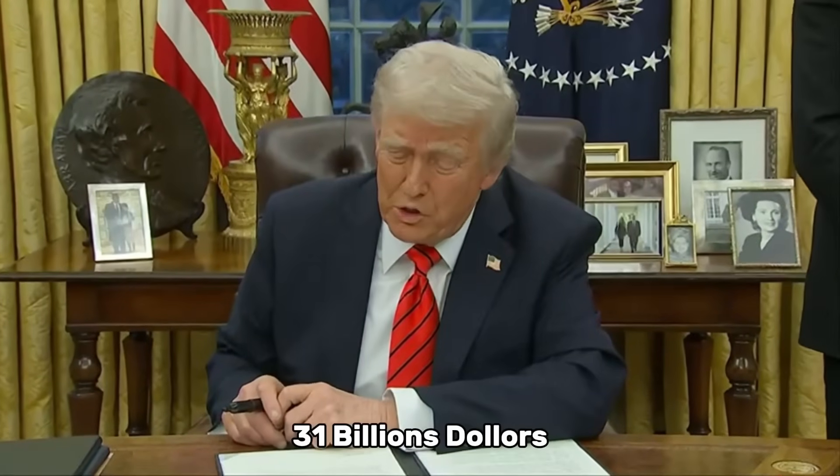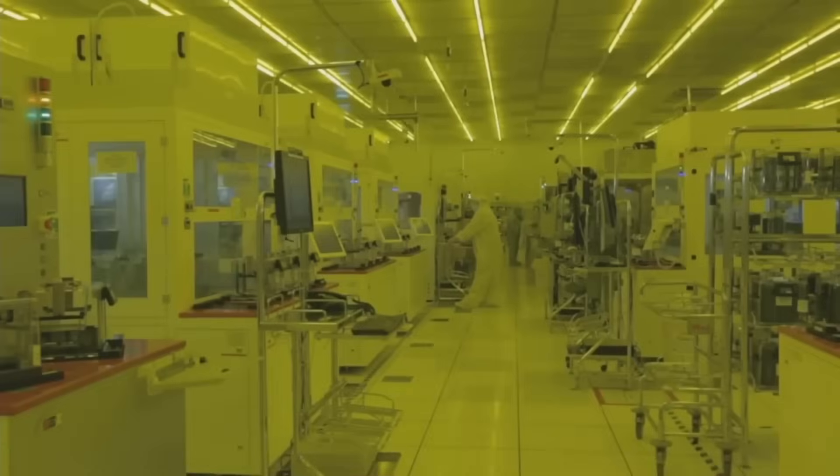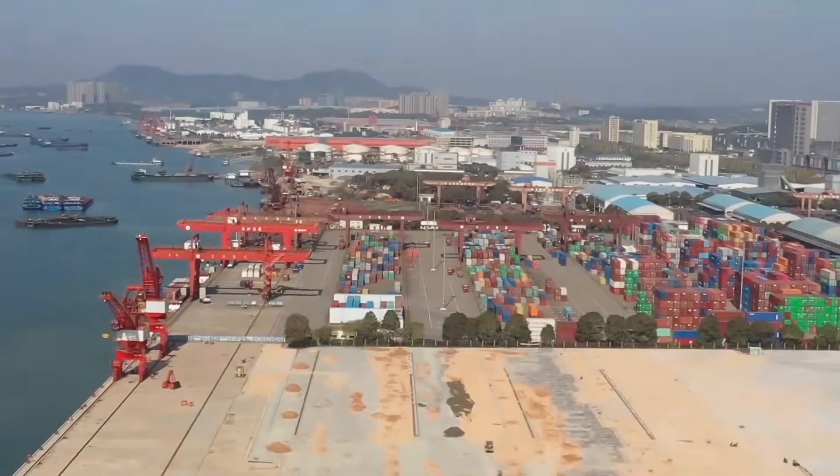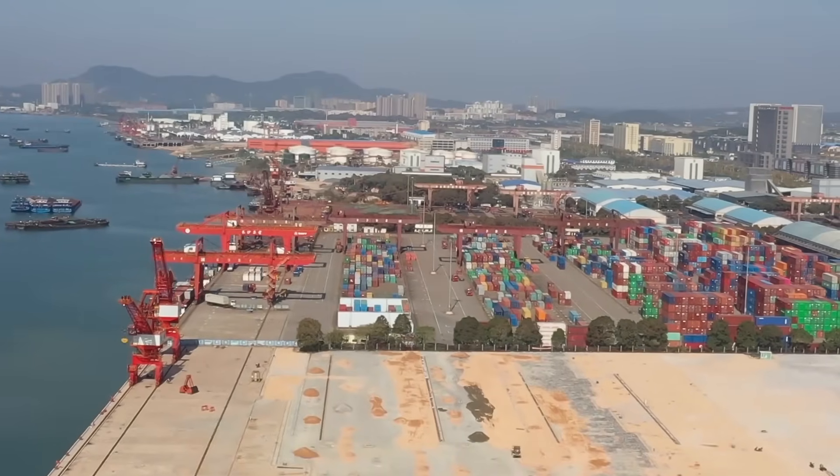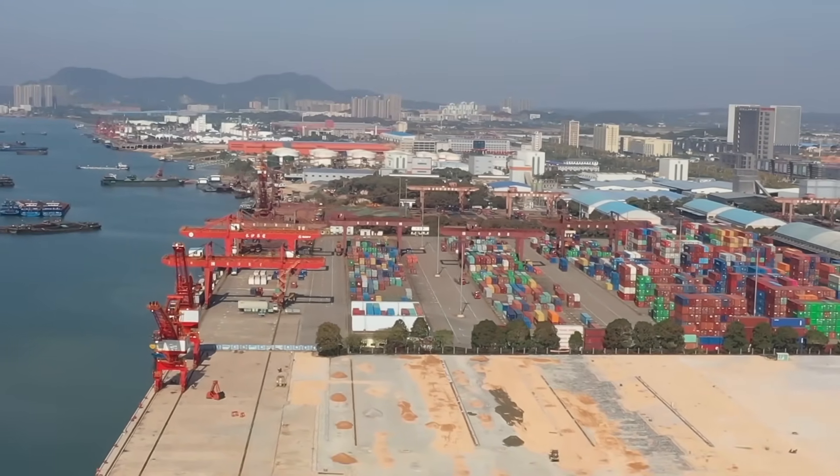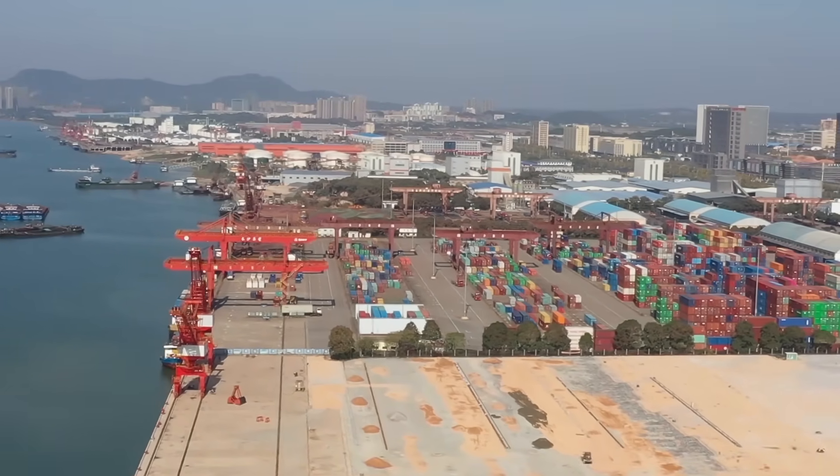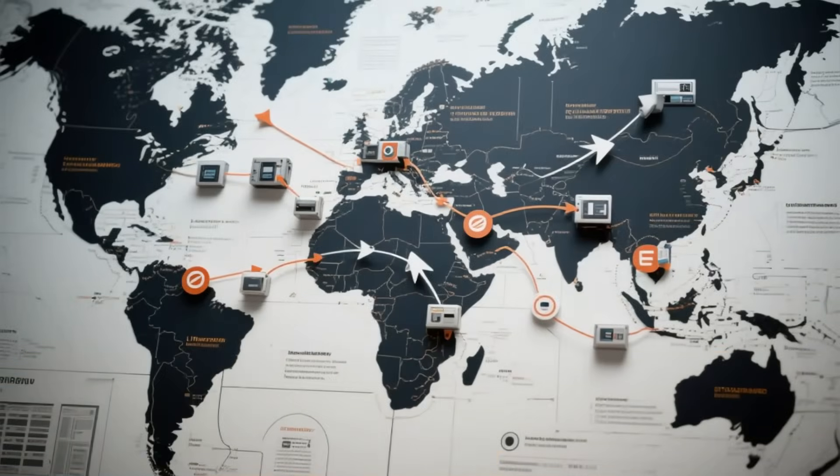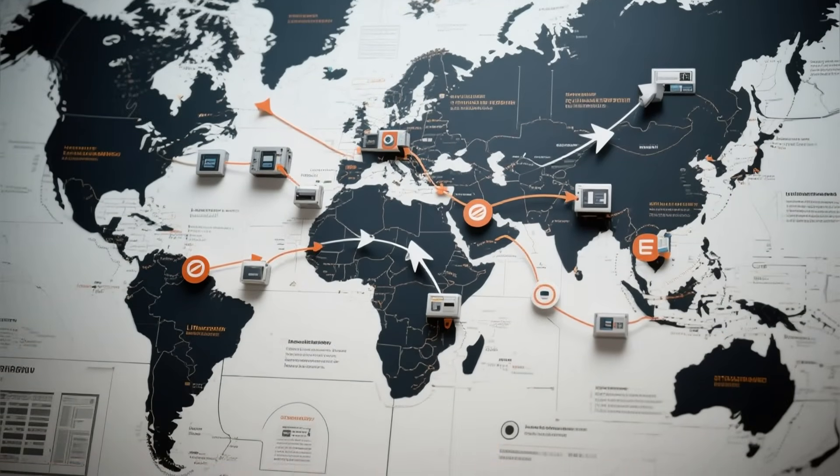Then came the sanctions. In 2019, the United States pressured the Netherlands to ban advanced EUV sales to China. By October 2022, sweeping export controls aimed to cut off China's access to cutting-edge semiconductor technology completely. In September 2023, even stricter limitations followed.